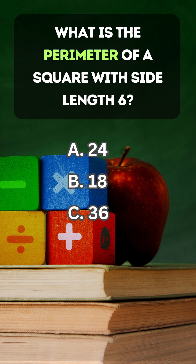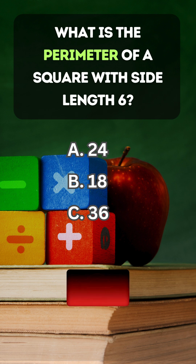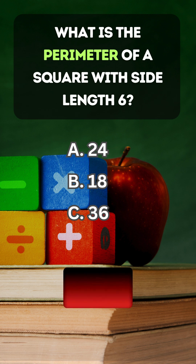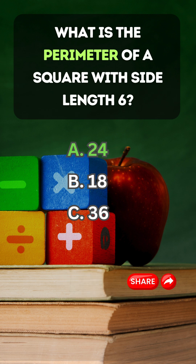What is the perimeter of a square with side length 6? Answer A. 24.